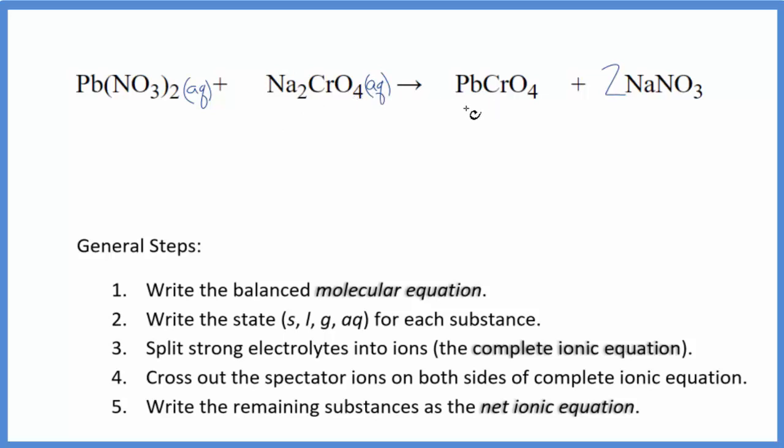And then when we get to this PbCrO4, this lead(II) chromate, lead compounds are often insoluble. If you look this up on a solubility table, you'll know that lead(II) chromate is insoluble. So it's not going to dissolve. It's going to be a solid. These two substances here react. This falls to the bottom in a precipitation reaction. Sodium compounds and nitrates, very soluble. Aq, so this will split into its ions, dissociate.